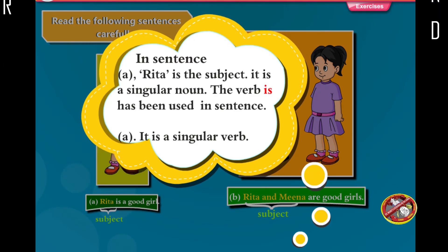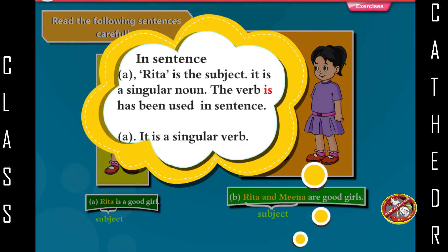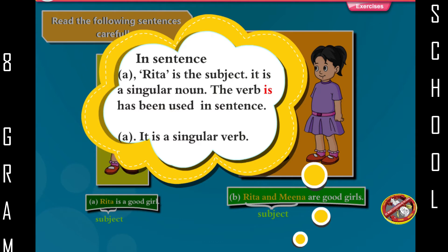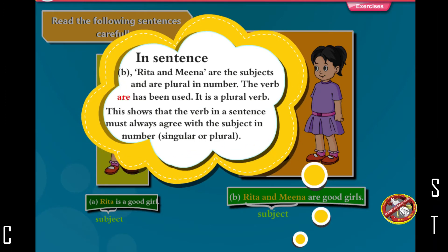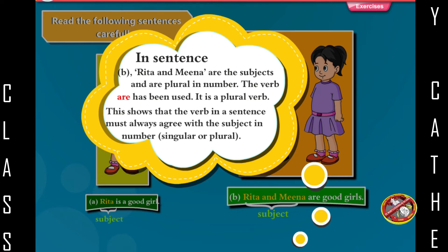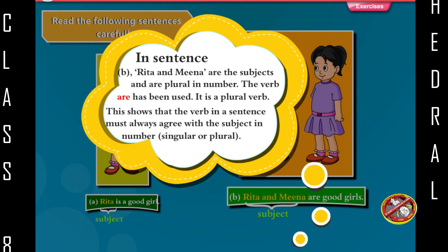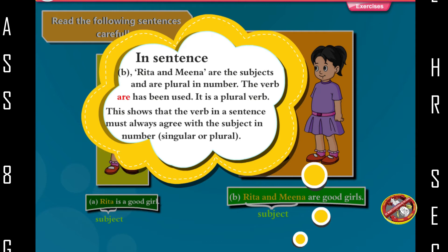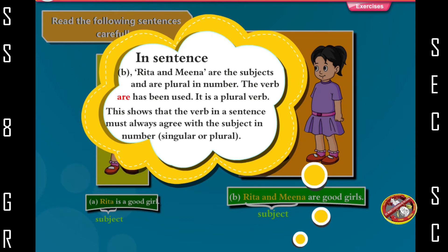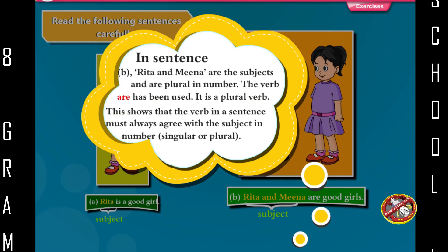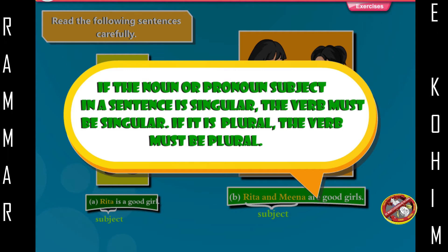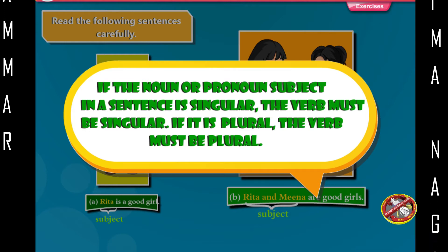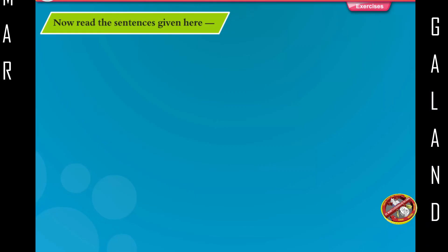In sentence A, Rita is the subject. It is a singular noun. The singular verb 'is' has been used in sentence A. In sentence B, Rita and Mina are the subjects and are plural in number. The verb 'are' has been used — it is a plural verb. This shows that the verb in a sentence must always agree with the subject in number, singular or plural. If the noun or pronoun subject is singular, the verb must be singular. If it is plural, the verb must be plural.